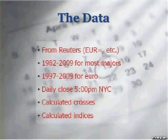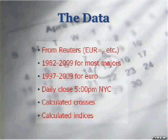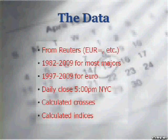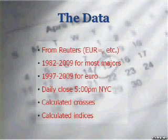What I did was take an equal weighting for all the currencies. So the dollar index that I've calculated is based on an equal weight of the euro, the pound, the Swissy, the Aussie, the Canada dollar. The performance is not all that different from what you see in the dollar index, as you probably would expect.